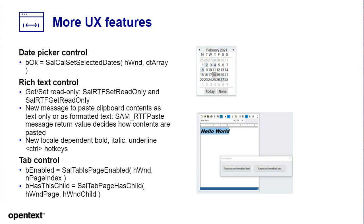New hotkeys have been introduced for both italic and underline, and these hotkeys are dependent on the user locale. The tab control now lets you retrieve whether a tab page is enabled and find out if a tab page has a child. These are massive new features for creating applications that leverage 4K and 8K displays.